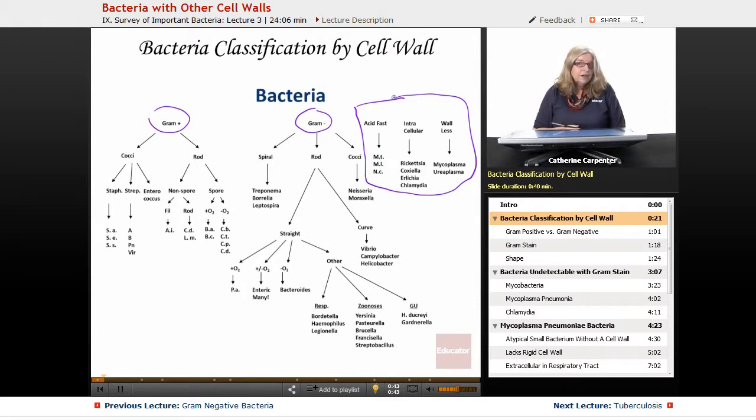We're going to talk about acid-fast bacteria in relationship to tuberculosis, the intracellular bacteria in relationship to chlamydia, and then the bacteria that don't have any walls at all, and those are the mycoplasma.